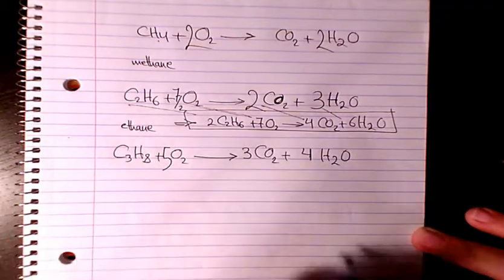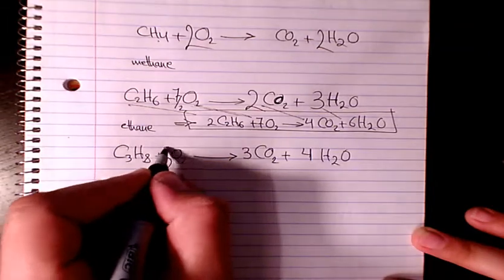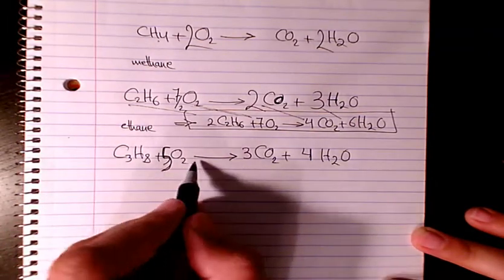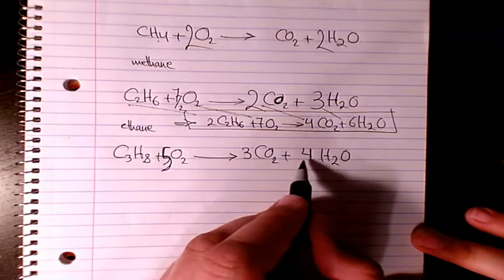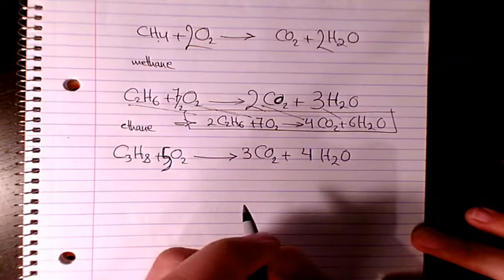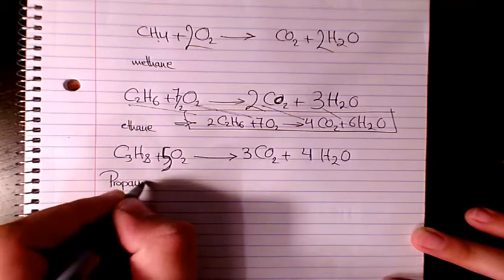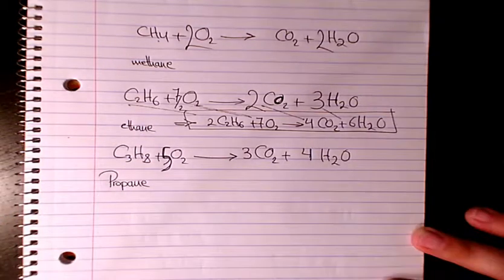Now it's balanced. So one mole of propane reacts with five moles of oxygen to produce three moles of carbon dioxide and four moles of water. So that's the combustion of propane.